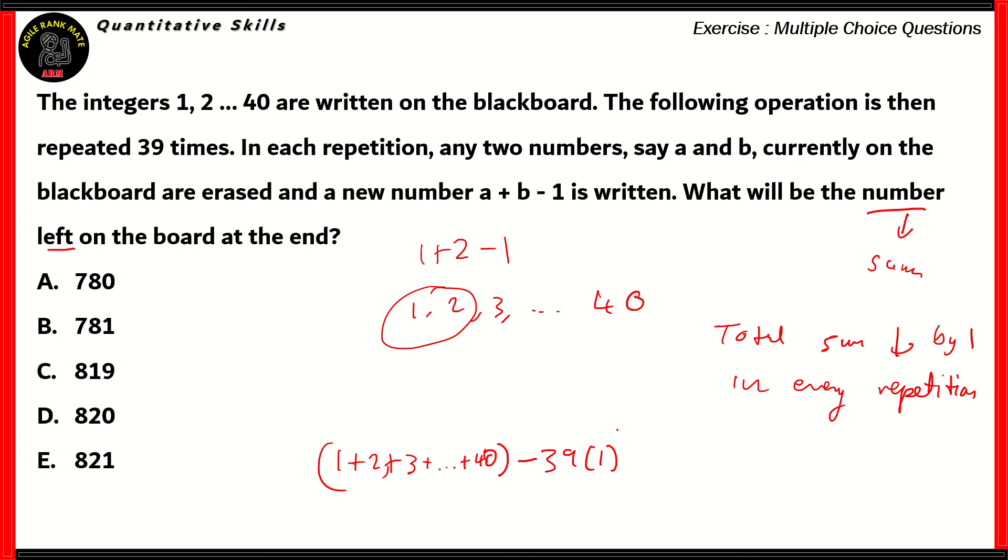We need to find out this answer, which will be the number left on the board at the end. We have n integers here, so their sum will be n times n plus 1 over 2. For this particular case, it will be 40 times 41 over 2 minus 39. 2 goes into 40 twenty times, so 41 times 20 gives you 820 minus 39. If you were to subtract that, 10 minus 9 is 1, 11 minus 3 is 8, and then you have 7 at the end. Therefore, option B, 781, turns out to be the right answer.